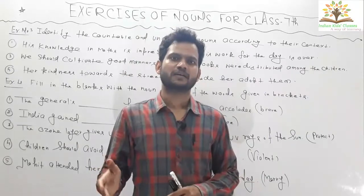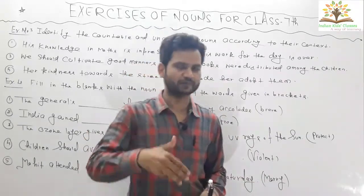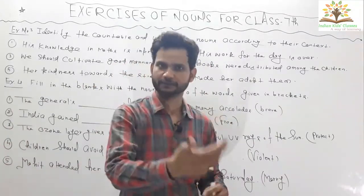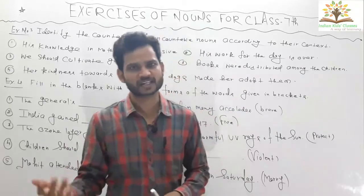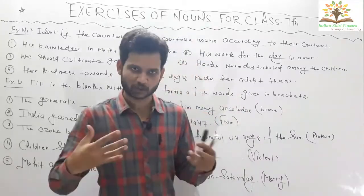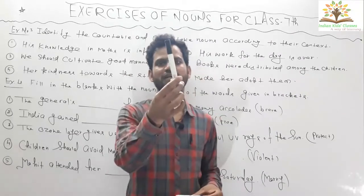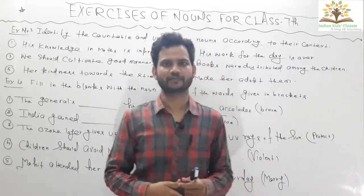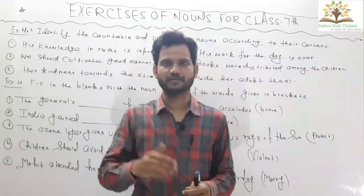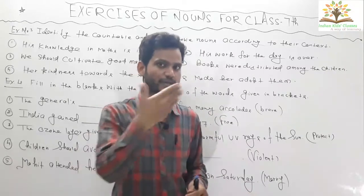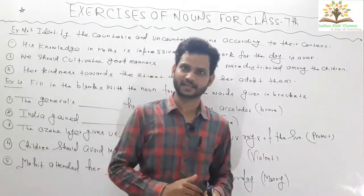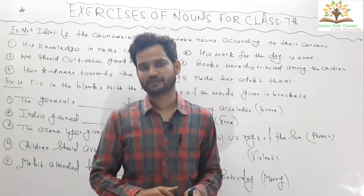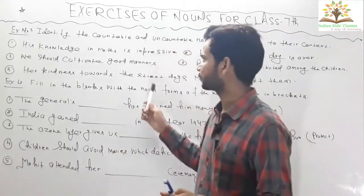As we know, there are two basic kinds of nouns: countable and uncountable. Wherever you find nouns, they may be one of these two types. For example, marker, board, and mobile are countable nouns. Knowledge is an uncountable noun. Bulb and tube light are countable nouns.